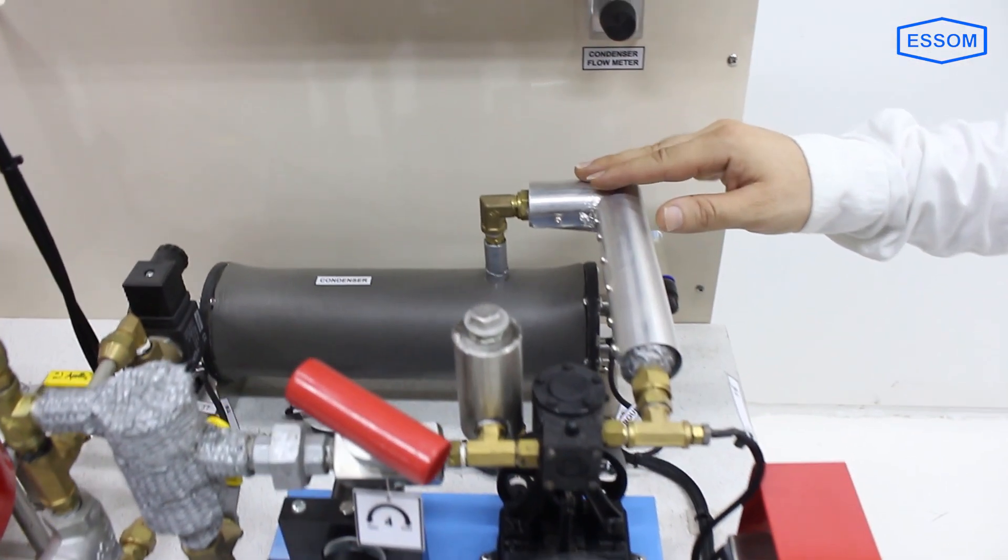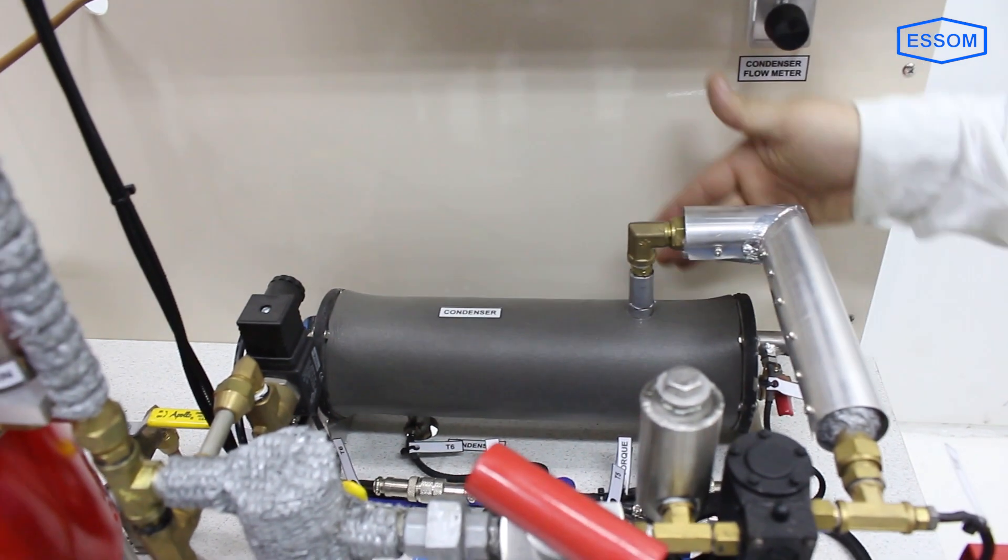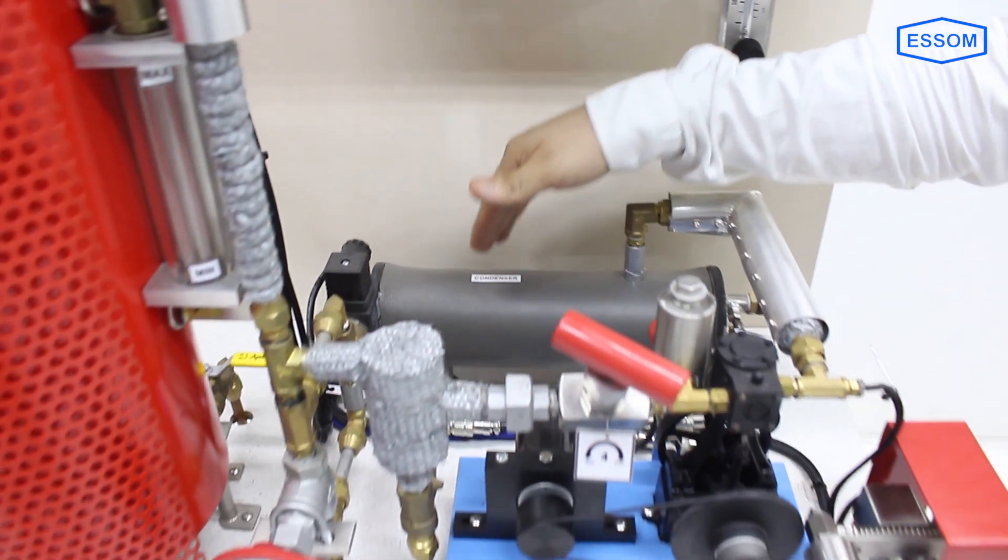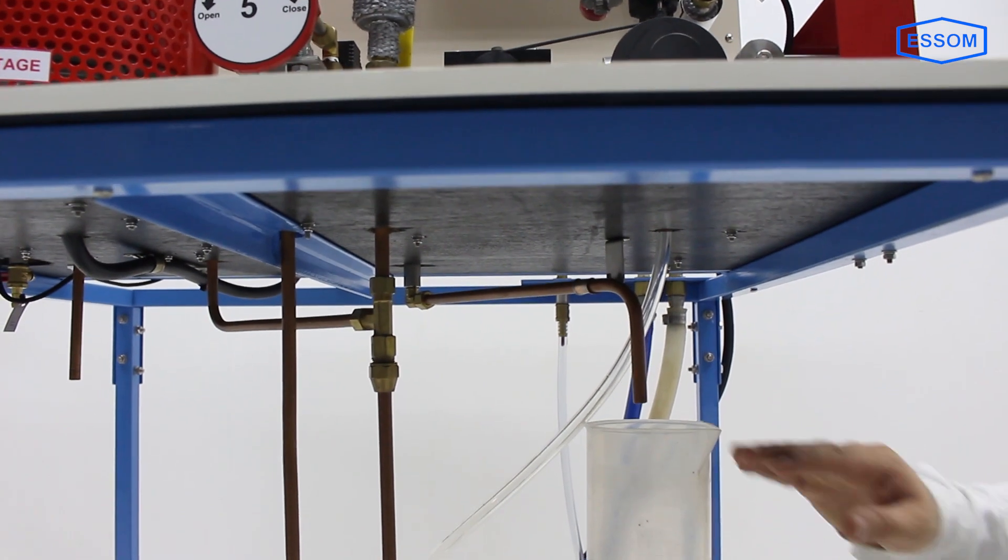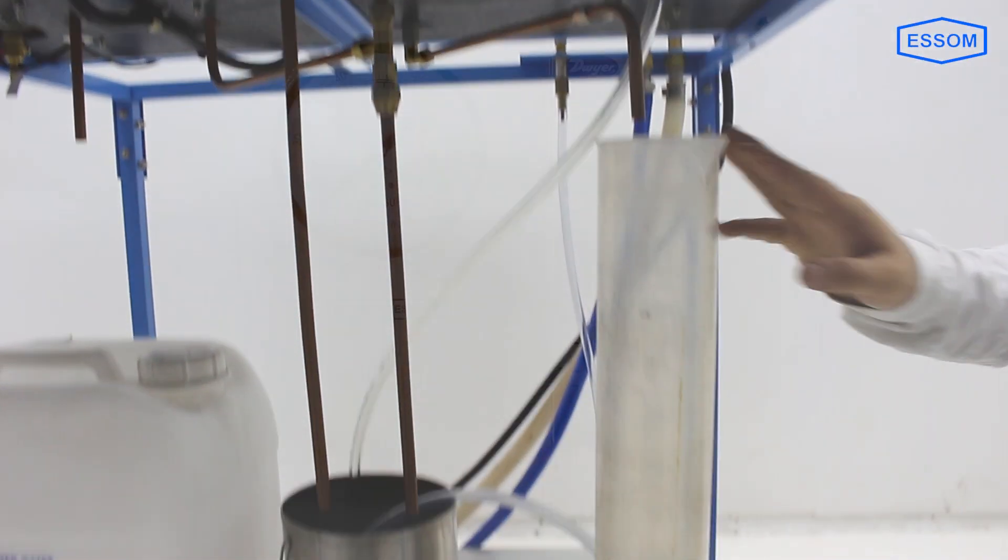Exhaust from the steam engine is condensed in a water-cooled condenser. Condensate is collected and returned to a feed water tank.